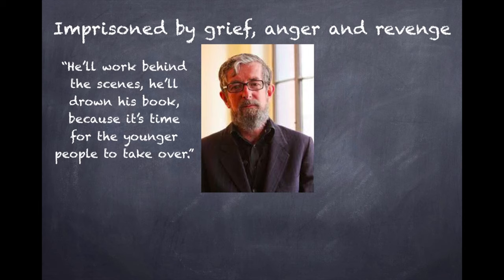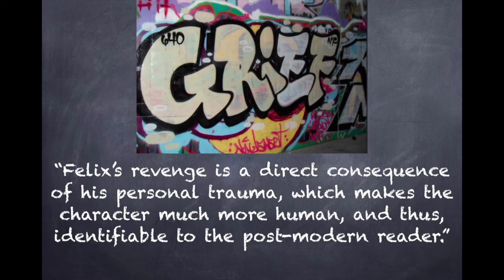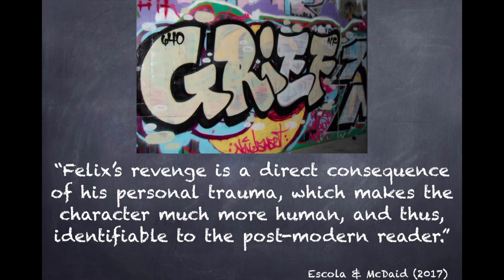We can see this in the final section of the novel. He hands over the Makashiweg Festival to Miranda and Freddie, and most importantly, he reconciles himself to his daughter's death. The exclamative recognition of his selfishness marks his final transformation and the freedom that such an acknowledgement brings. This can be seen in the truncated final sentence that serves as an echo to the direct Shakespearean allusion preceding it. Felix's revenge is a direct consequence of his personal trauma, which makes the character much more human and identifiable to the postmodern reader than Prospero's narrative of political betrayal over a noble title.